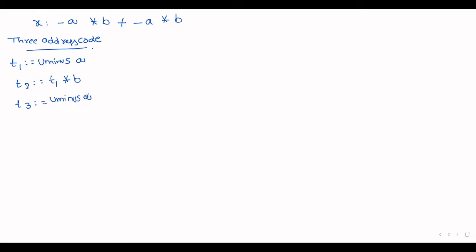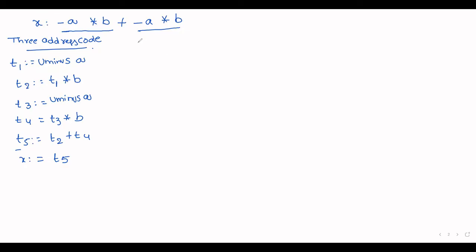t2 = t1 * b, t3 = unary minus a, t4 = t3 * b. This value is placed in t2 and this value is placed in t4. Now perform addition between t2 and t4: t5 = t2 + t4. Finally the result is assigned: x = t5. This is the three address representation.